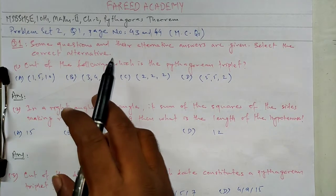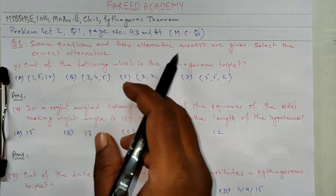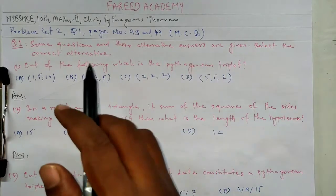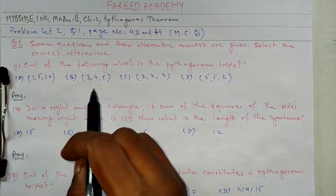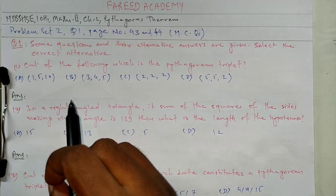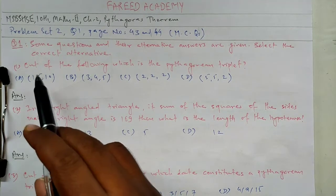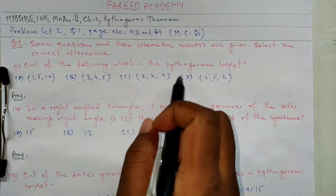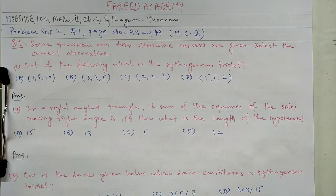Some questions and their alternative answers are given. Select the correct alternative. If there is one alternative correct, we have to select out of 4. Let's start. First question is, out of the following, which is the Pythagorean triplet? First of all, let's see for Pythagorean triplet.